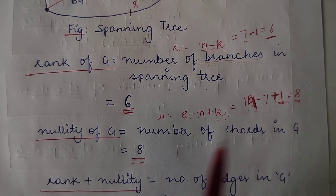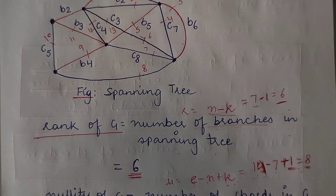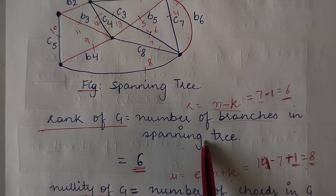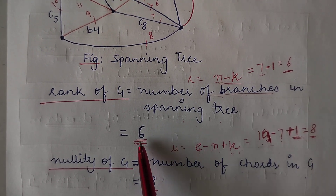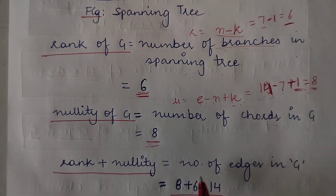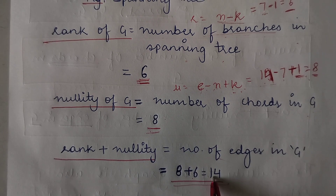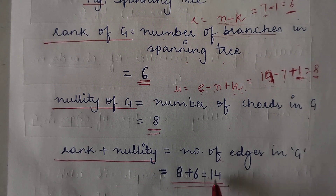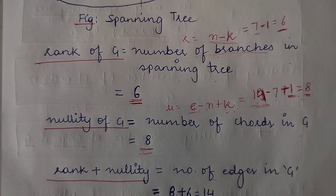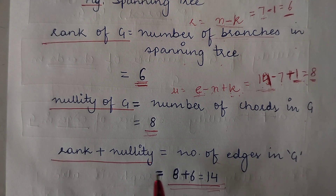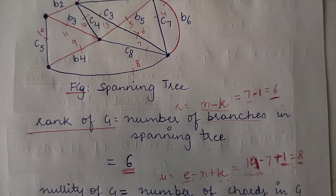Since rank includes all edges in the spanning tree and nullity includes all edges not in the spanning tree, adding rank and nullity gives the total number of edges in the graph. That means 6 plus 8 gives 14, and we counted that the total number of edges were 14, which confirms the result. So rank plus nullity equals the total number of edges in the graph.